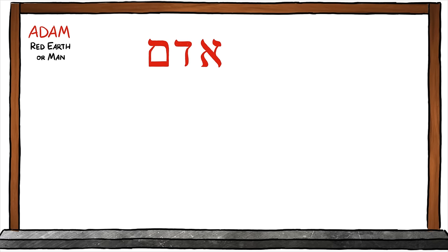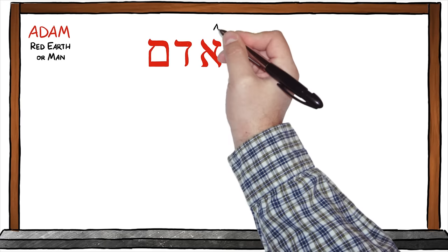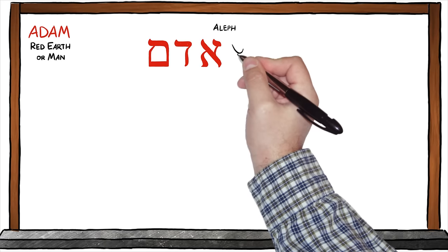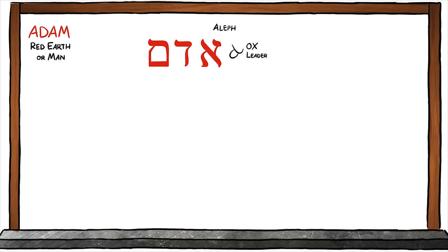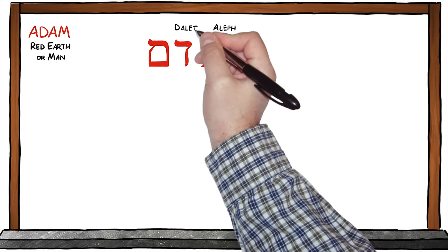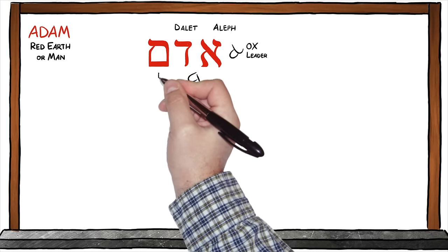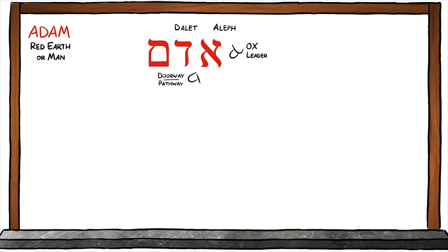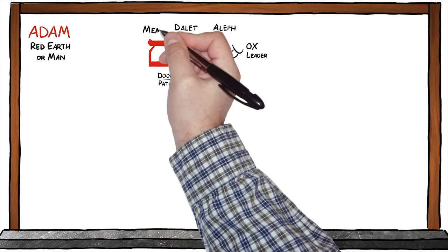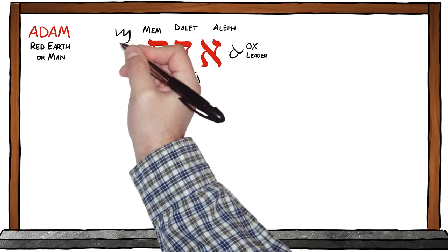The first Hebrew letter in the name of Adam is Aleph. Aleph is pictured as an ox — the strong leader who will guide and protect the herd. The second Hebrew letter in the name of Adam is Dalet, pictured as a doorway or a pathway. The final letter in the Hebrew name of Adam is Mem, pictured as waters.